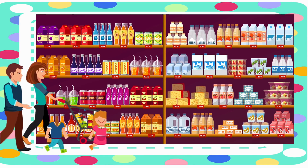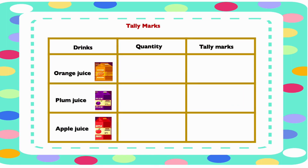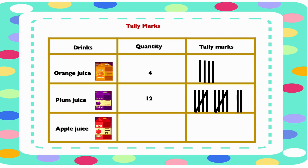Mr. Jones and family also came to another shop and bought some drinks. Now let's count them using tally marks. At the shop they bought some orange juice, some plum juice, and some apple juice. They bought four orange juices, represented by four straight lines. They bought twelve plum juices, represented by two groups of five and two straight lines. And they bought eight apple juices, represented by one group of five and three straight lines.